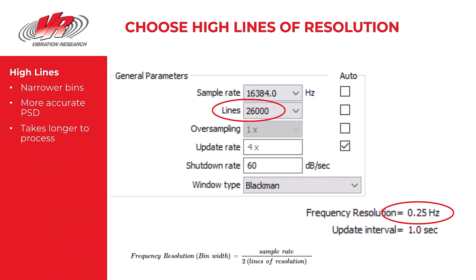The goal is to make as narrow a bin width as possible. Narrow bin widths mean there will be more bins across the spectrum and therefore a more accurate and detailed plot of RMS values across the spectrum. In our equation, for a given sample rate, the more lines of resolution you have, the smaller the frequency resolution or bin width will be. As you can see on this screen, with a sample rate of 16,384 and lines set to 26,000, the frequency bin width will be 0.25 hertz — a quarter hertz.